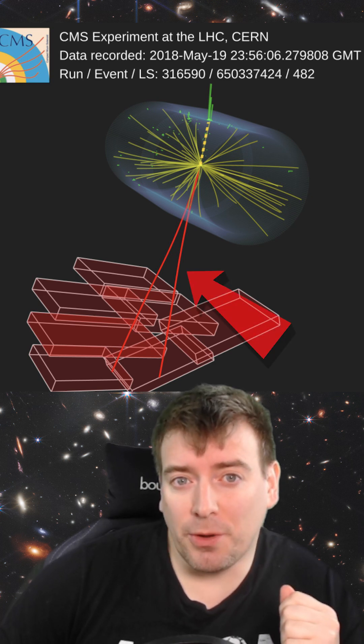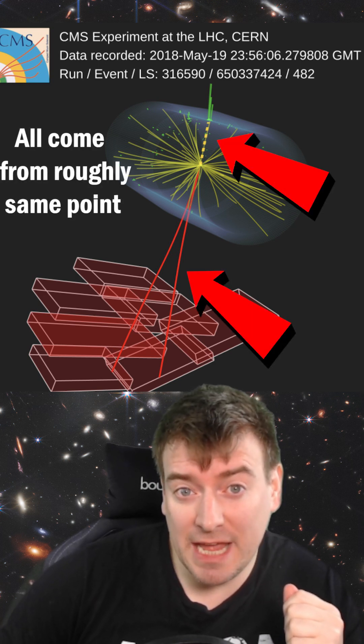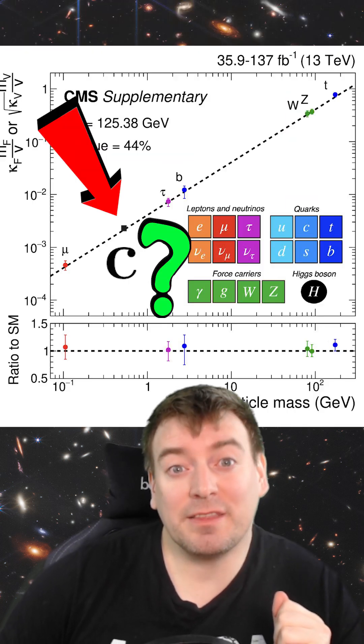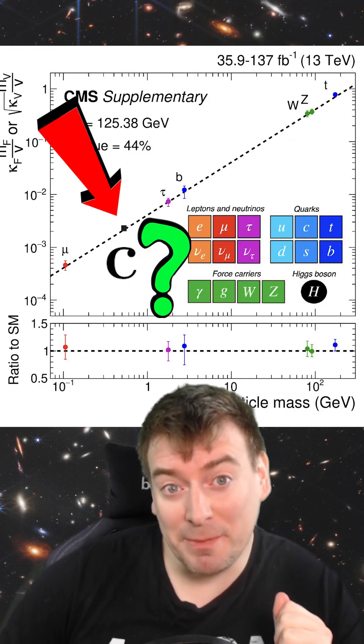So if you can find two muons and a photon that reconstruct a Higgs boson decay, you can isolate and measure the size of the Higgs boson's charming interaction.